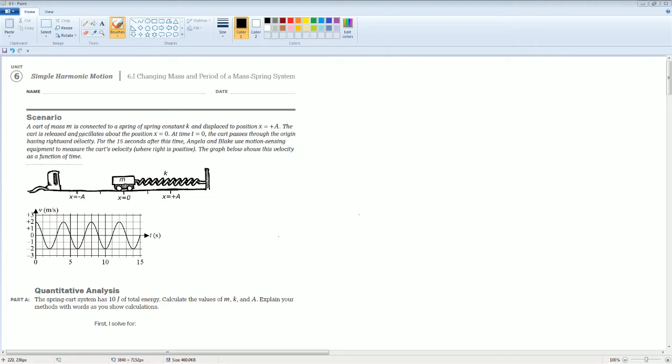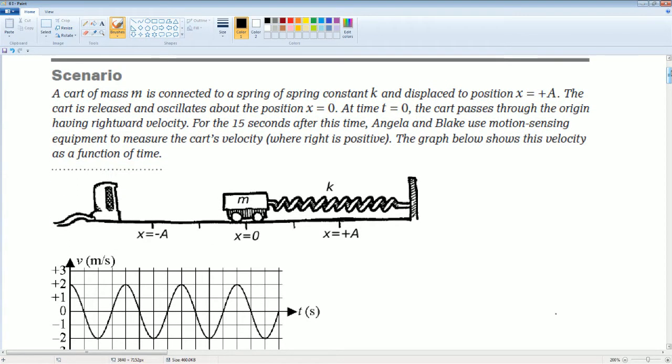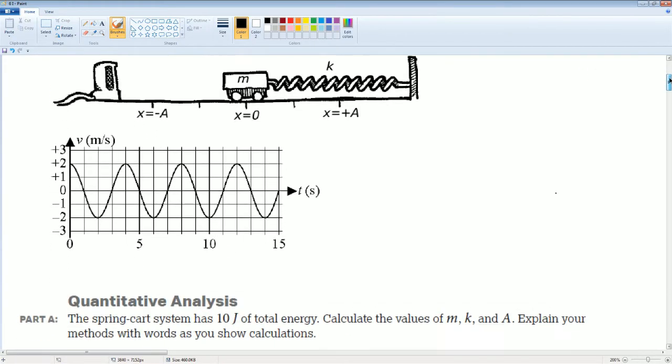Welcome. This is the AP Physics Workbook Solution. Here we have Unit 6, Simple Harmonic Motion. This is Session 6.I, Changing Mass and Period of a Mass Spring System. Here's the scenario. You could read the scenario to yourself if you would like. Pause the video if you would like. Alright, so here's the first question.